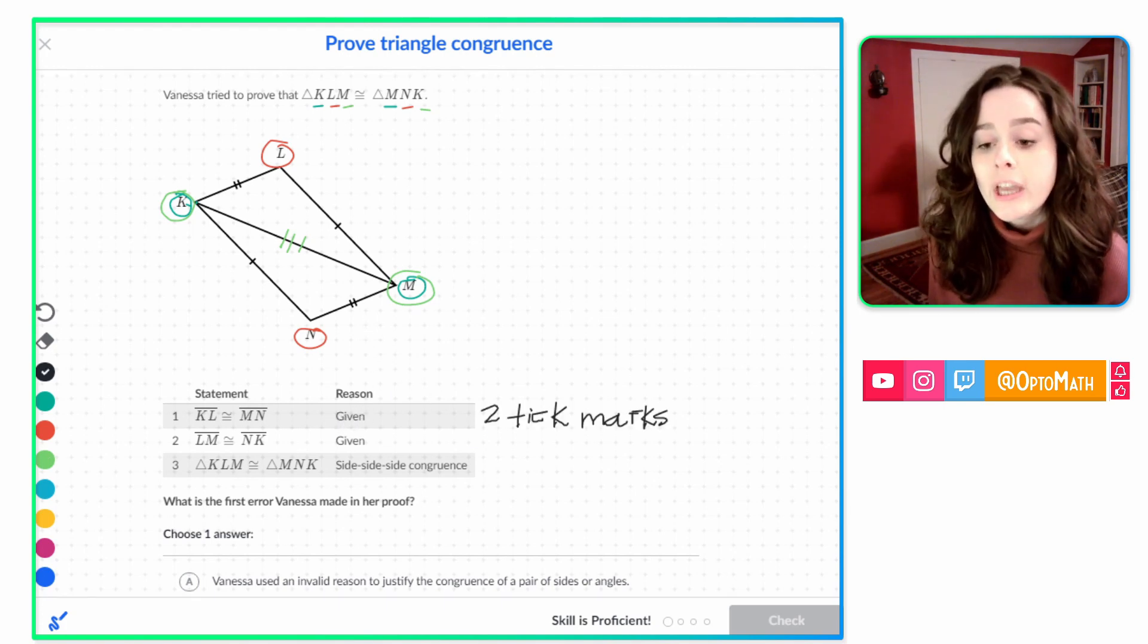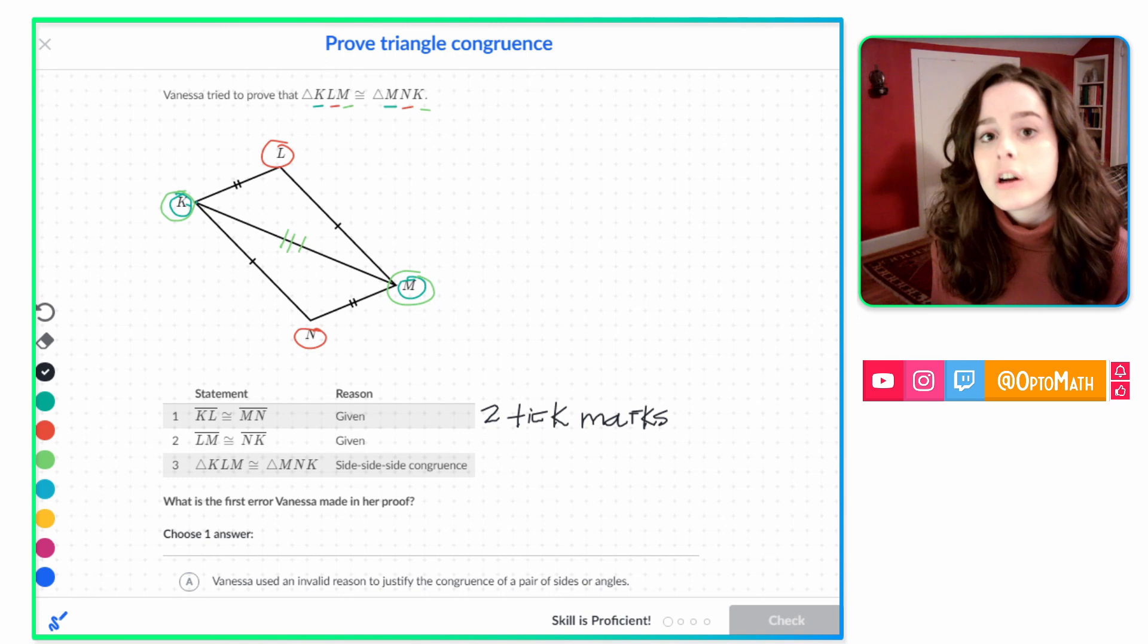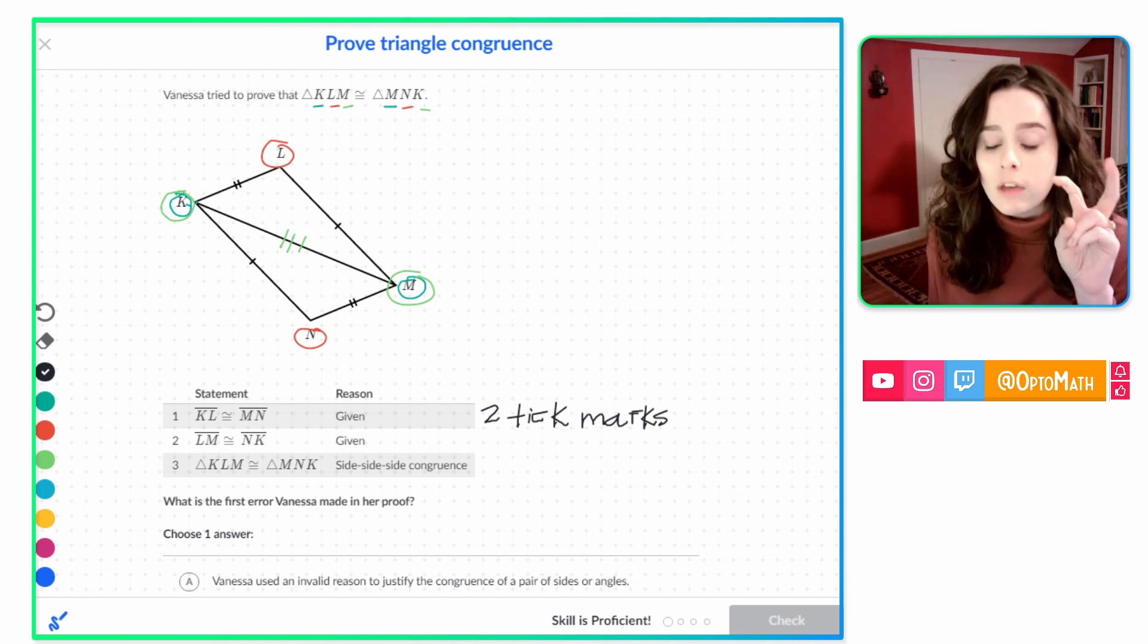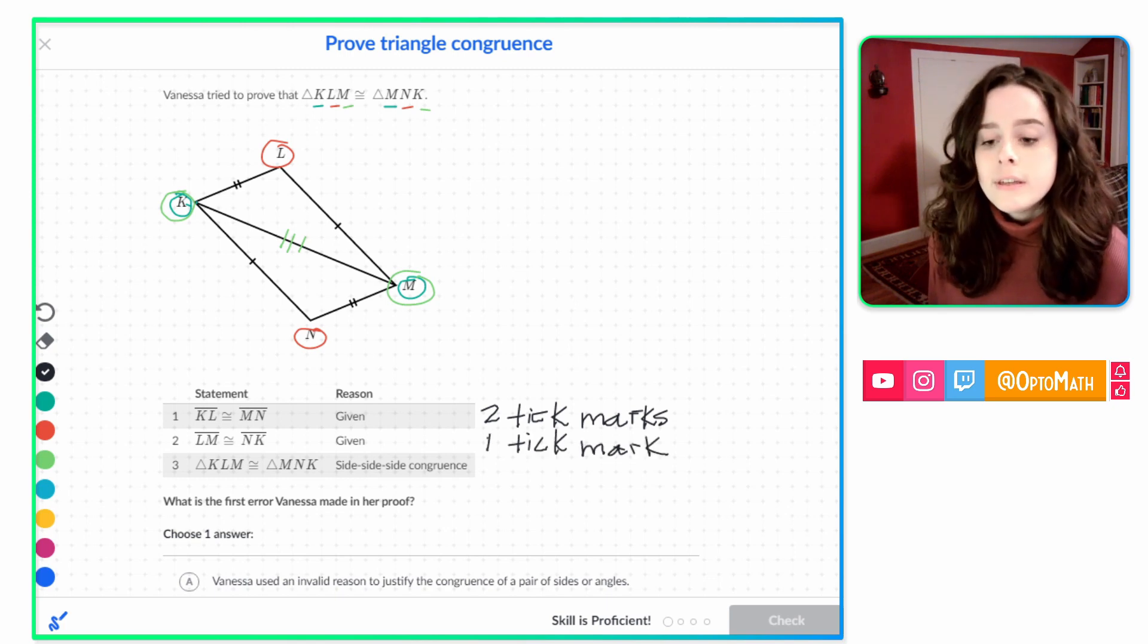Next, let's look at what we say about number two which is LM is congruent to NK. So LM, which is one tick mark is congruent to NK. And that's a given, says Vanessa. That's true because the tick marks are already there in our image. So remember, if something's given to us in an image, it is considered a given for our reason. So let's write that one tick mark.